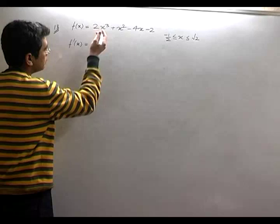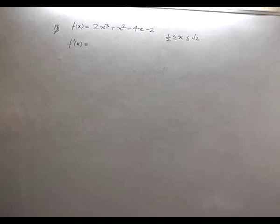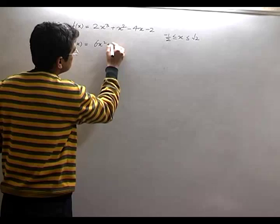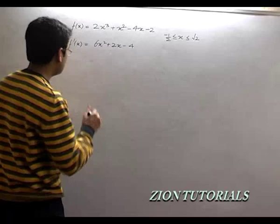Second is, what is differentiable? Obviously, continuous is here. So the part of the f(x) is differentiable also. So I will give it a differentiation. So it will be 6x squared plus 2x minus 4.